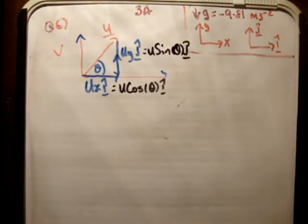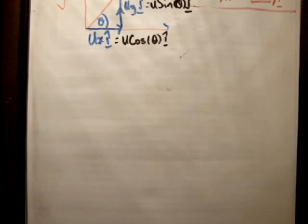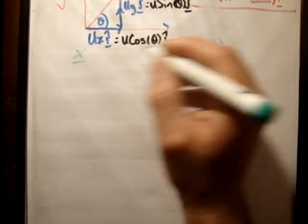So applying that same reasoning, we'll see that u sub x, i hat, is actually u cos theta, i hat, and this is equal to u sine theta, j hat. And we know that u is equal to 50 meters per second. So the next thing is, we do our u vast, x-axis, y-axis.